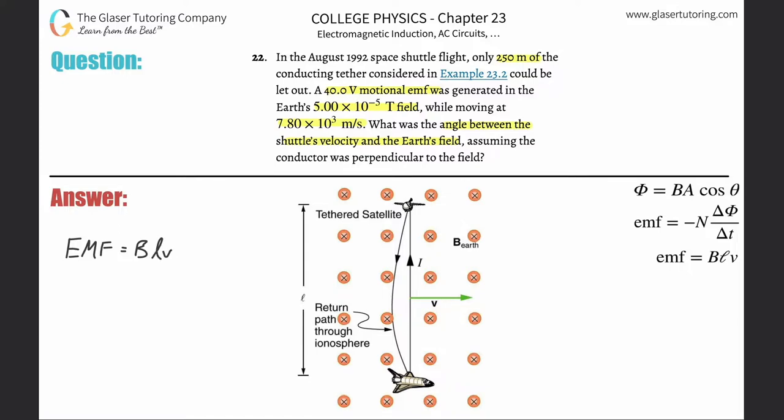So this is going to be, I'm rewriting the formula and what we're going to add here is we're going to multiply by sine of theta. Now theta will represent the angle between the velocity and the external magnetic field.